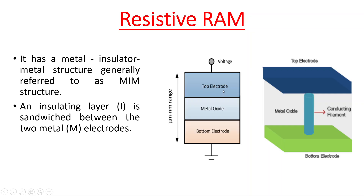You can see there is a top electrode of metal and a bottom electrode of metal, and in between there is a metal oxide, which is the insulating layer. This insulating layer will have a conducting filament formed when we apply a voltage.